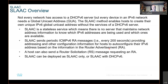SLAAC sends periodic ICMPv6 RA messages every 200 seconds, providing addressing and other configuration information for hosts to auto-configure their IPv6 address. A host can also send a router solicitation message requesting an RA. If it doesn't want to wait about three and a half minutes for the router advertisement from the local router, it will actually send out a router solicitation message saying, hey, I need a router advertisement.